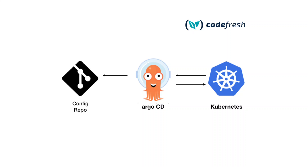Argo is a leading GitOps tool. As a formal definition, GitOps is primarily a practice to manage software deployments along with its infrastructure. It is mainly focused on deploying resources on your Kubernetes cluster. For example, you deploy containers in Kubernetes as pods, and these pods are declared as YAML files or manifests.